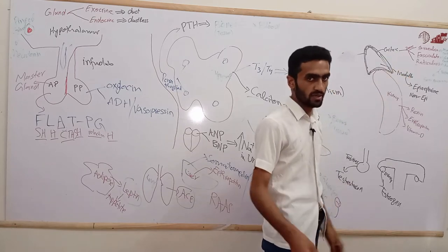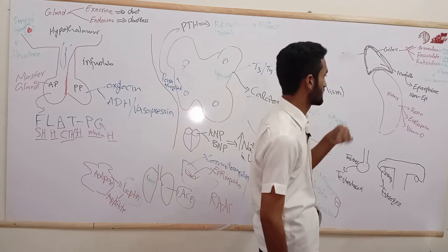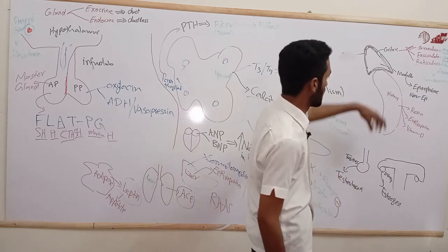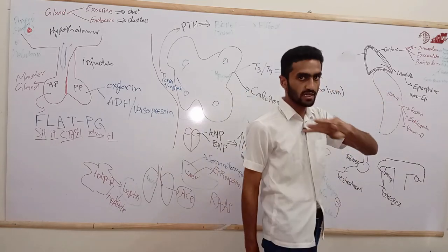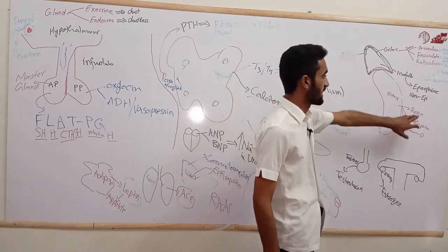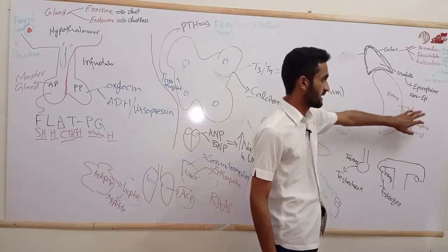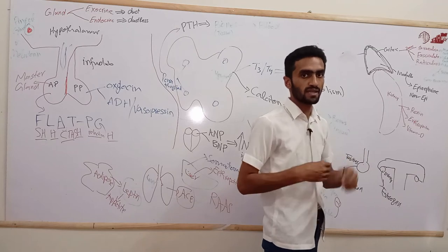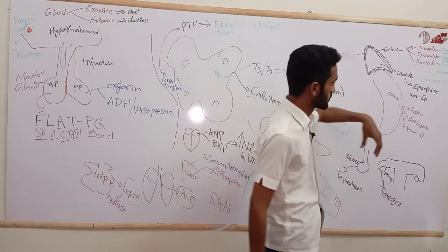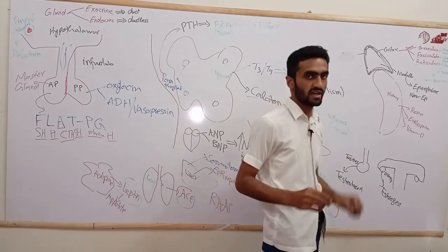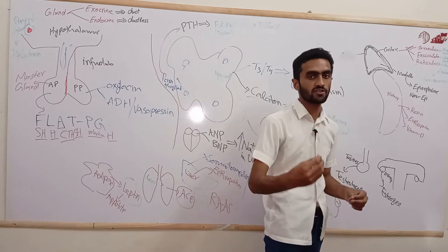The kidney secretes three hormones: renin, erythropoietin, and vitamin D. Renin is secreted by the juxtaglomerular apparatus and maintains the renin-angiotensin-aldosterone system.